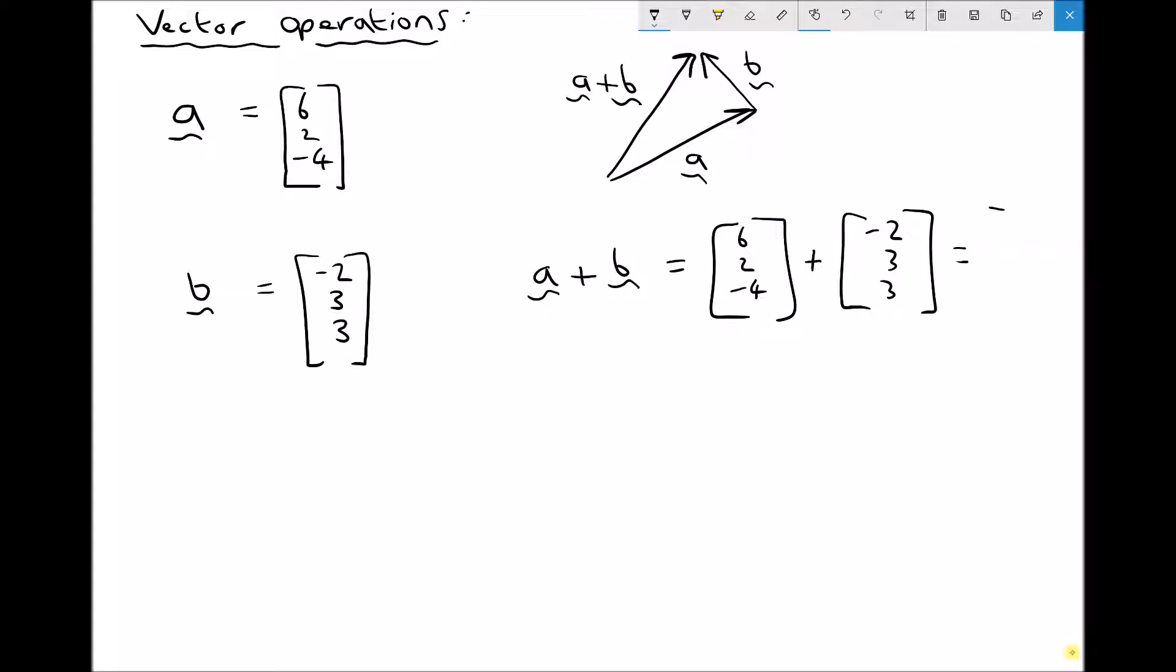And all we need to do is add the x components together. So we have 6 plus minus 2 gives us 4. 2 plus 3 gives us 5. And minus 4 plus 3 gives us minus 1. So the vector A plus B equals 4, 5, minus 1.